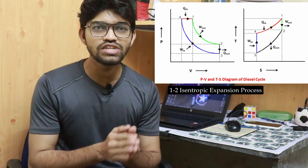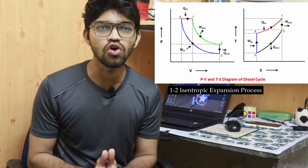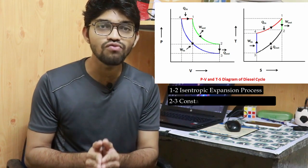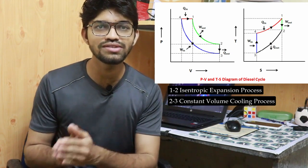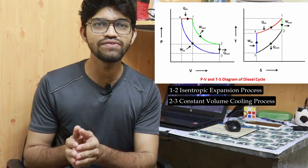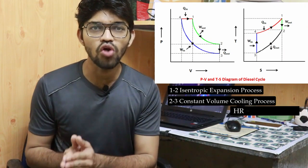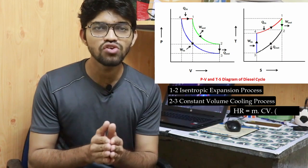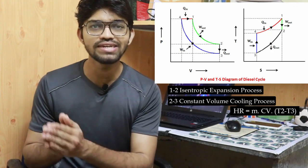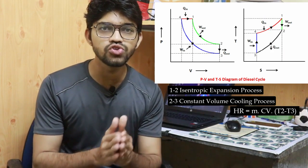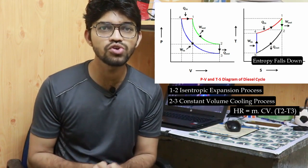After the isentropic expansion, heat is rejected to the atmosphere at constant volume. Process two to three is the constant volume cooling process. The heat rejected can be calculated using the formula: Q_rejected = m · cv · (T2 - T3), where m is the mass of air and cv is the specific heat at constant volume. During this cooling process, entropy also reduces along with temperature, as seen in the T-S diagram.